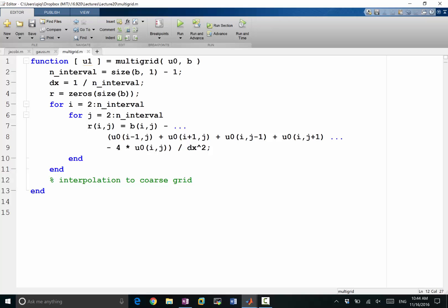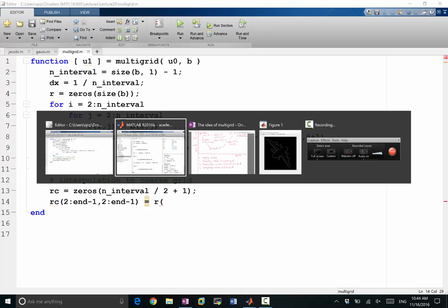Our interpolation to the coarse grid would be something like that. Let's call it rc is equal to... I think we'll do exactly what you mentioned, that we will make a coarse grid that is exactly twice as coarse as the fine grid. So it'll be zeros(n_interval/2 + 1). I still need the boundary conditions, and the rc(2:2:end-1, 2:2:end-1) would be a copy of my R.